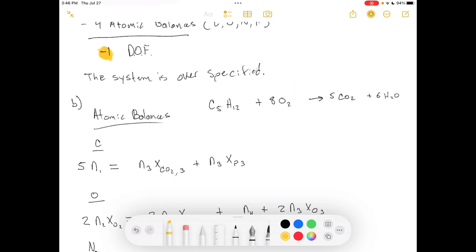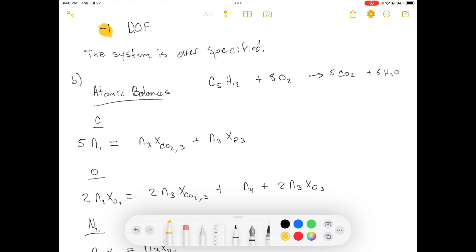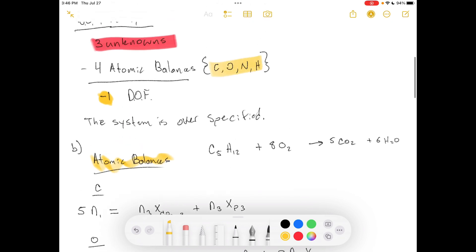So for part B, use balances to prove that the reported percentages could not possibly be correct. So we've got our atomic balances that we can do. There are four of them right there. And this is our reaction equation.